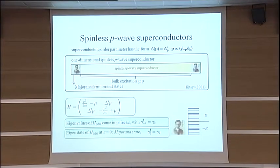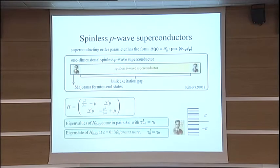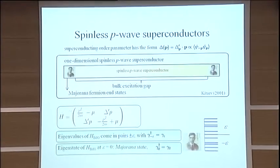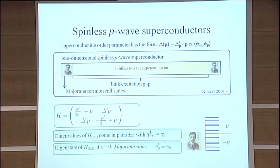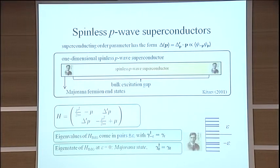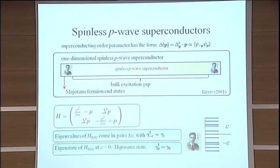And theoretically, we describe such a wire using the Bogoliubov-de Gennes equation, which is an equation with a Hamiltonian, like a Schrodinger equation, but it has a two-component grading for particles and holes. On the diagonal, you have your normal Hamiltonian, which is P squared over 2m for the particles, minus P squared over 2m for the holes.